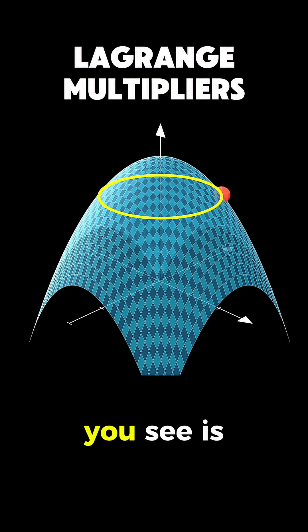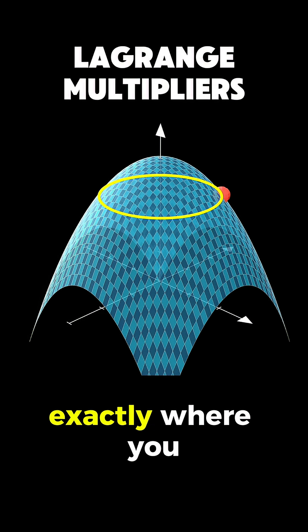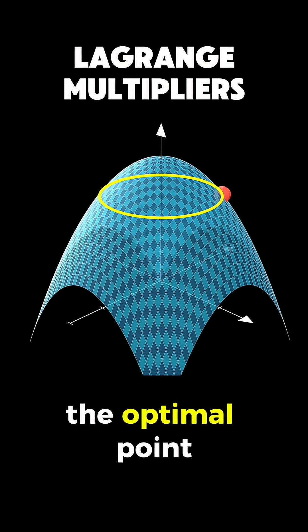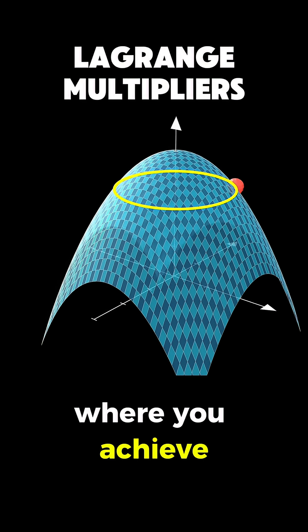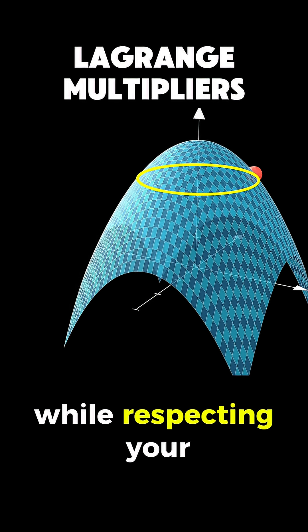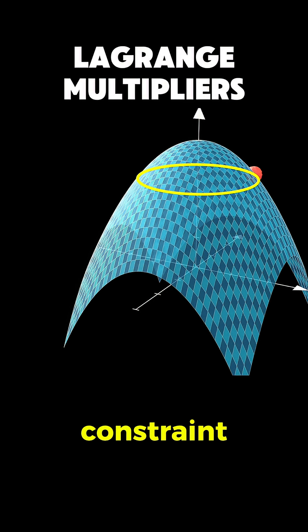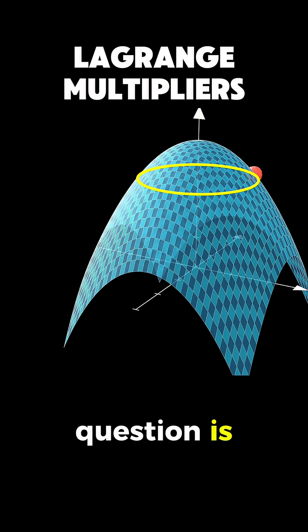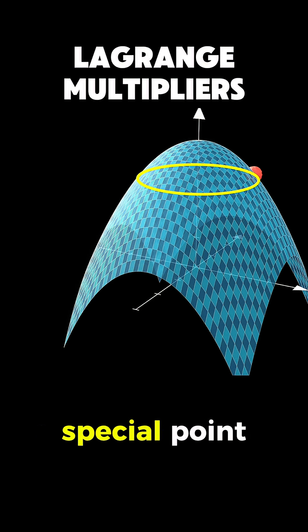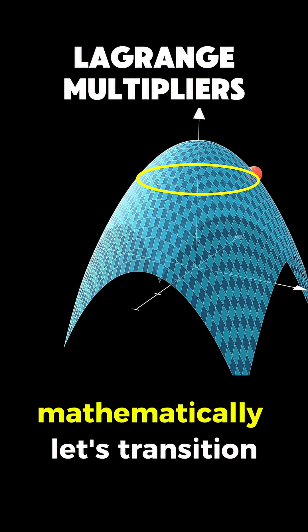That red dot you see is exactly where you want to be — the optimal point where you achieve maximum height while respecting your constraint. So the natural question is: how do we actually find this special point mathematically?